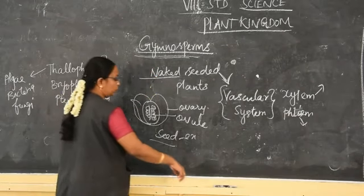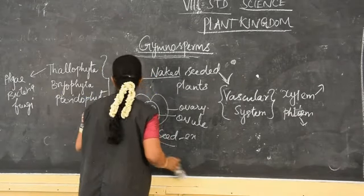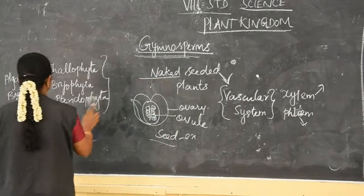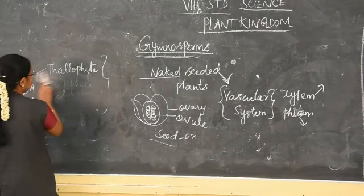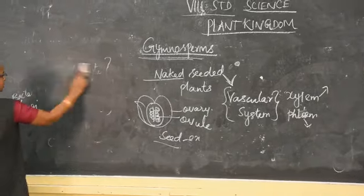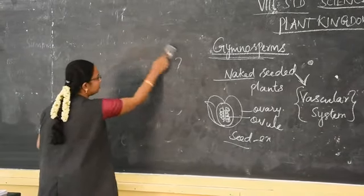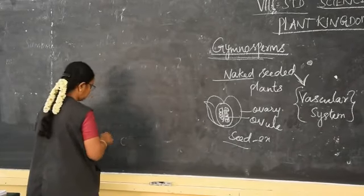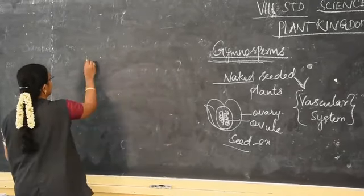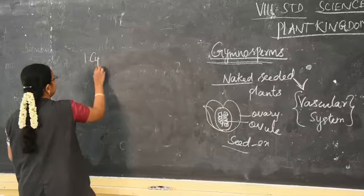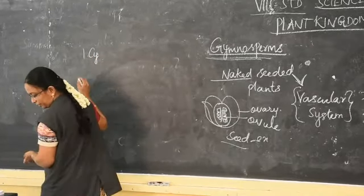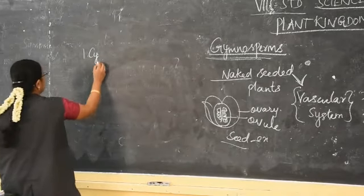Now about the classification. The classification of Gymnosperms consists of four types. The first one is Cycadales.